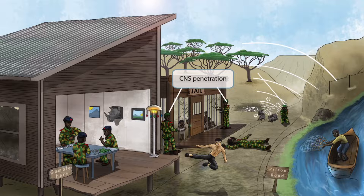To help you remember the CNS penetration, we've included hats on most of the guards in this image. We typically use hats to represent meningitis because hats cover the head, just like the meninges cover the brain. In this instance, the hats refer generically to CNS penetration, and this CNS penetration makes this a very dangerous disease.